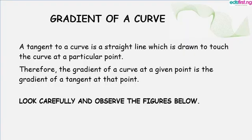Now, the major work now is the gradient of a curve. A tangent to a curve is a straight line which is drawn to touch the curve at a particular point. Therefore, the gradient of a curve at a given point is the gradient of a tangent at that point. Look carefully and observe the figure below.